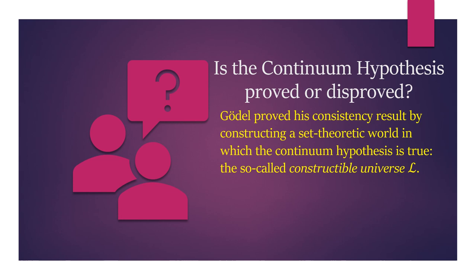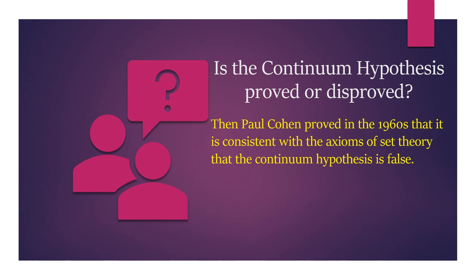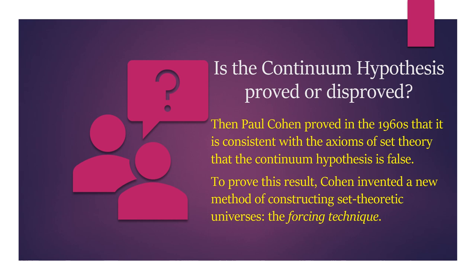Gödel's consistency result therefore implies that there cannot be a proof that the Continuum Hypothesis is false. Thirty years later, Paul Cohen proved that it is consistent with the axioms of set theory that the Continuum Hypothesis is false. To prove this result, Cohen invented a new method of constructing set-theoretic universes: the forcing technique. This technique works in the opposite way from Gödel's; using it, he constructed a set-theoretic universe in which the Continuum Hypothesis is false.